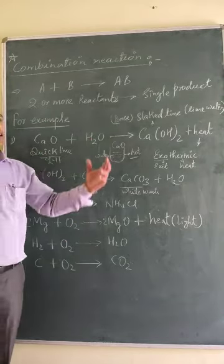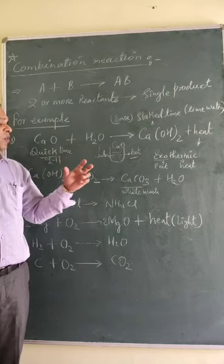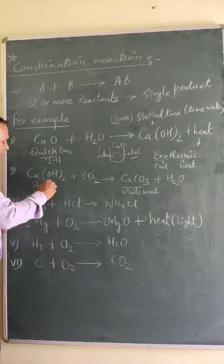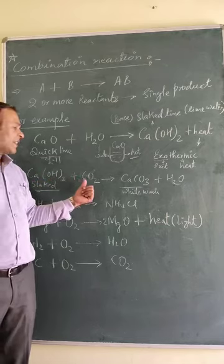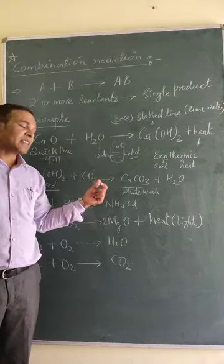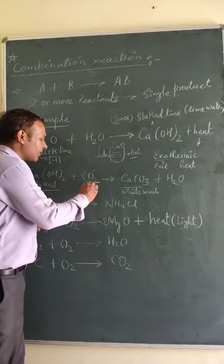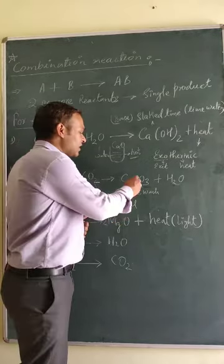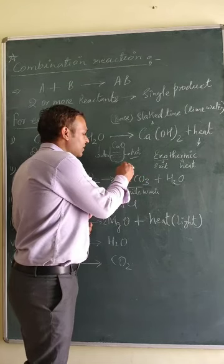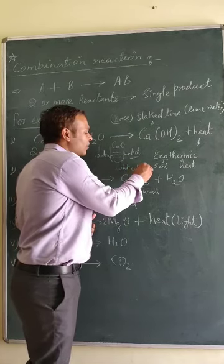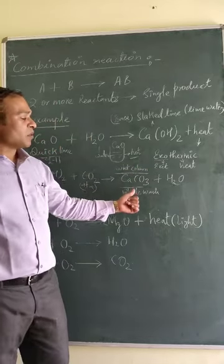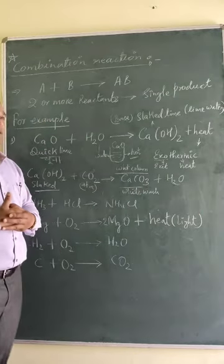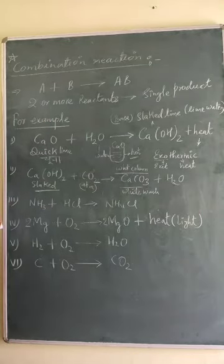When we whitewash a wall with calcium hydroxide, which is slaked lime, after some time it starts reacting with carbon dioxide available in the atmosphere, forming a layer of calcium carbonate. Calcium carbonate forms a white-colored layer on the wall. Water is also produced in the form of vapor and goes into the atmosphere.